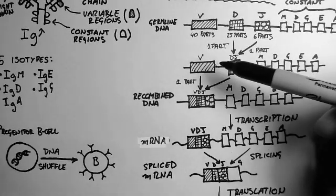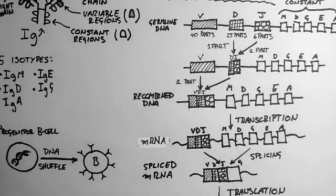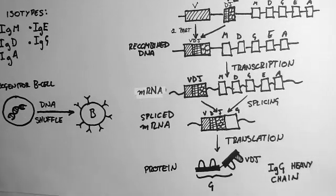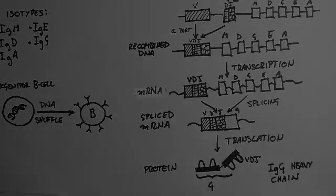Now a very similar thing happens with the light chain recombination, except that there's no D region. So it's just a V-J recombination. But the rest is exactly the same. And that will give us the two parts to make up our antibody. And that's an overview of antibody production.